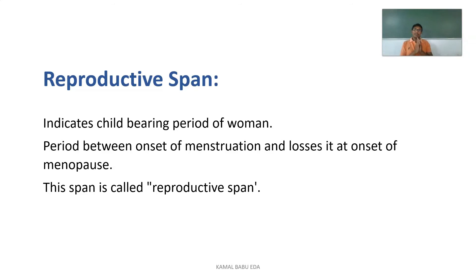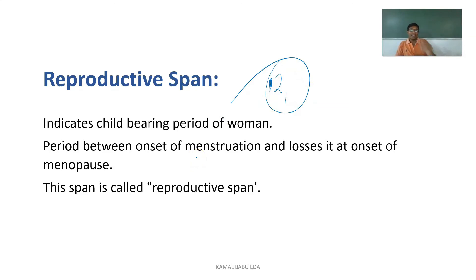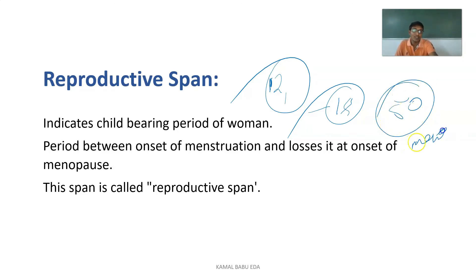Reproductive span indicates the child-bearing period of a woman — from the onset of menstruation to the onset of menopause. Puberty may begin around 12 years of age depending on diet and body build, though legally marriage is permitted only after 18. Around age 50, women undergo menopause when the ovulation cycle stops. The reproductive span is therefore from the start of menstruation to its cessation.